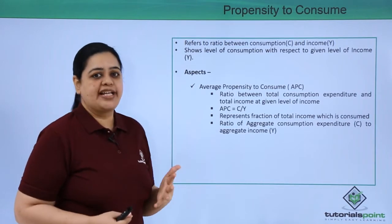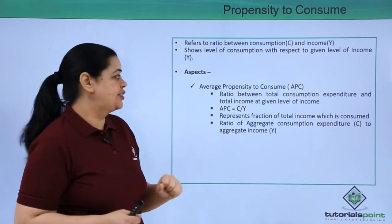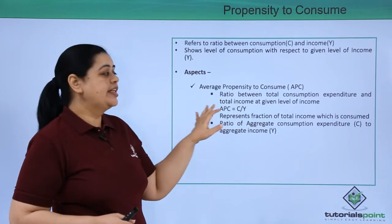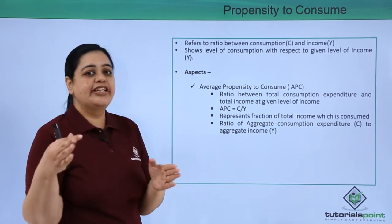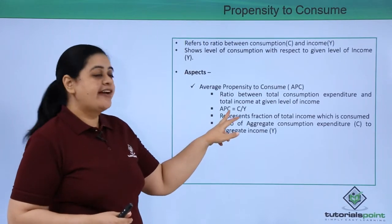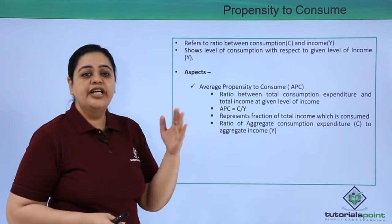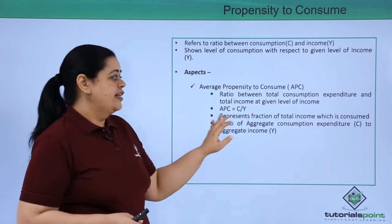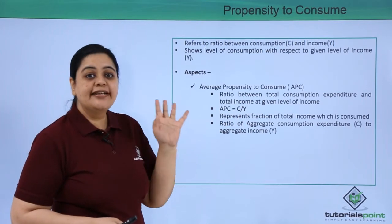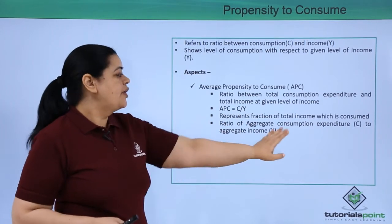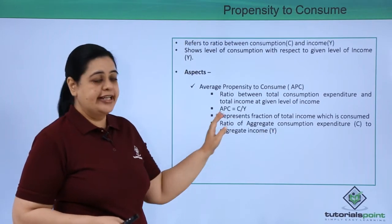Propensity to consume has two aspects. The first is average propensity to consume (APC), which is the ratio between total consumption expenditure and total income at a given level of income. Mathematically, APC = C / Y, representing the fraction of total income which is being consumed.